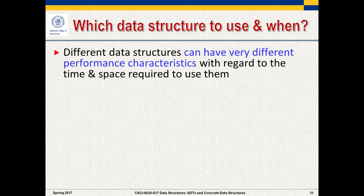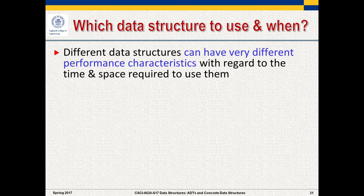Different data structures will have very different performance characteristics. When we're talking about measuring the efficiency and efficacy of data structures, usually we're talking about the time and space that they take when you're executing them. Time is the amount of cycles involved in processing a certain amount of data — we usually talk about n being the number of elements as a metric. Space is the amount of extra space taken up in order to use a particular data structure and particular set of algorithms.